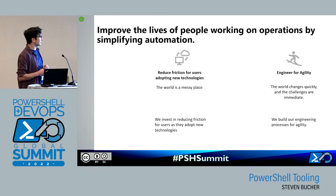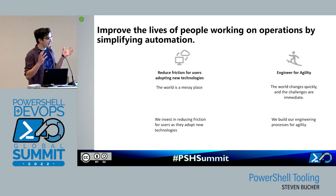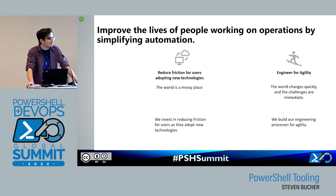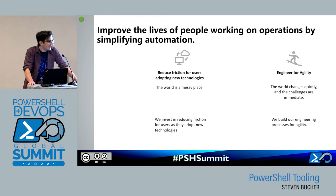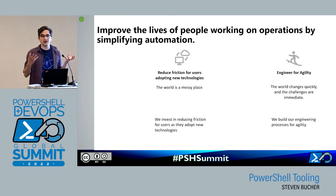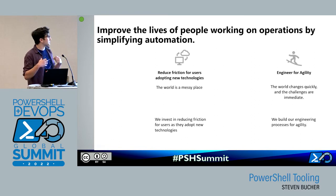The next thing is engineering for agility. The world changes quickly and challenges are immediate, so we build our engineering process for agility. A couple of years ago we'd get one release every three years, but now in the past three years we've had 60 different releases. Working with open source and the community, we can get previews in your hands, get bugs filed, issues filed, and understand what's needed to really help you guys.